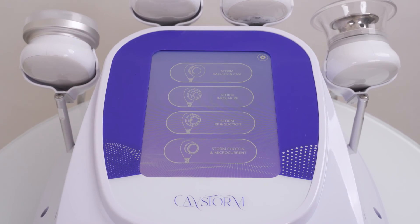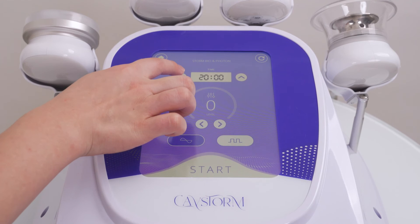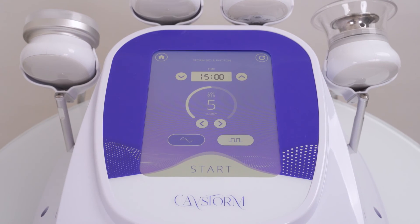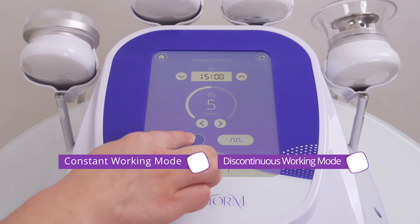Choose the Storm photon microcurrent function button. Set time at 15 minutes and NS level at 2 to 7. Mode selection includes constant working mode and discontinuous working mode. The former is recommended.